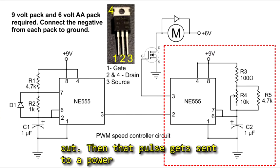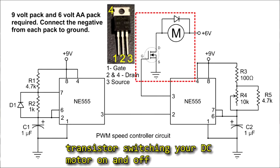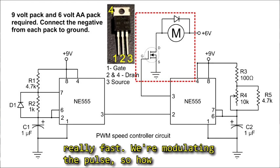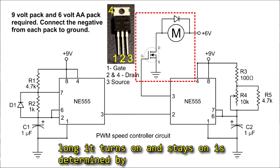Then that pulse gets sent to a power transistor, switching your DC motor on and off really fast. We're modulating the pulse, so how long it turns on and stays on is determined by these circuits.